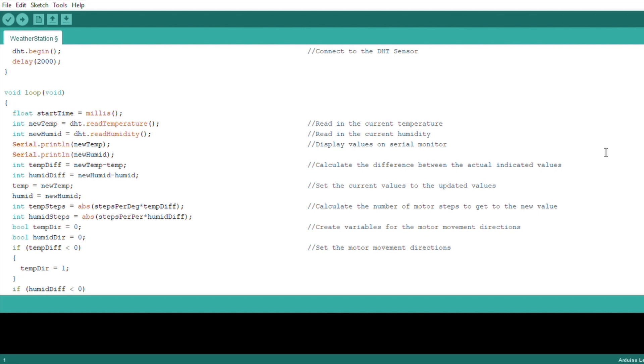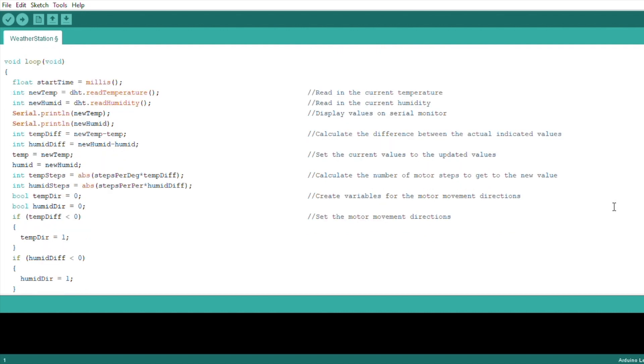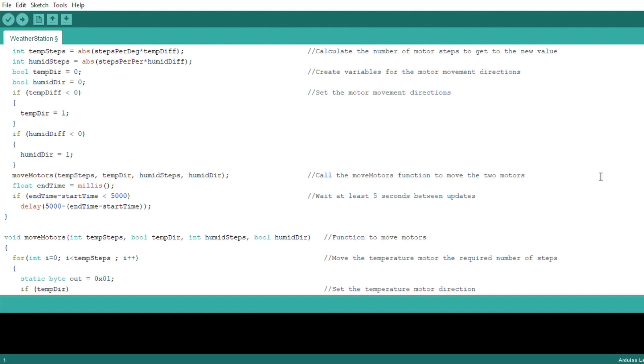We then take the differences and convert them into a number of steps required to get to that indication on each gear. Then set the directions of movement and call a function called move motors to move each of the motors the required number of steps and in the particular direction.